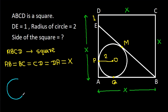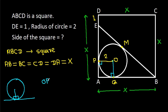In any circle, the radius and tangent are perpendicular to each other. So this angle will be 90 degrees and this angle will be 90 degrees. Also, OP will be equal to OQ, that is the radius, so it will be 2. OQ is 2.